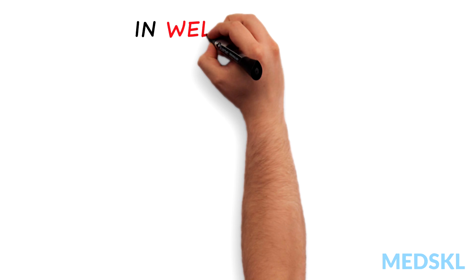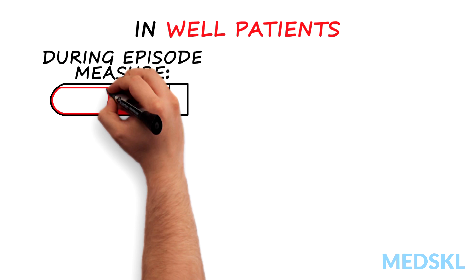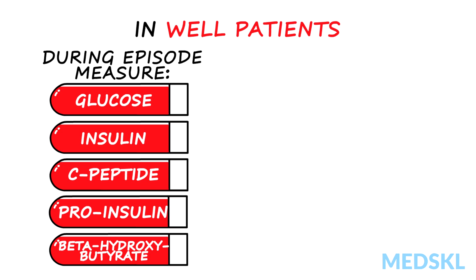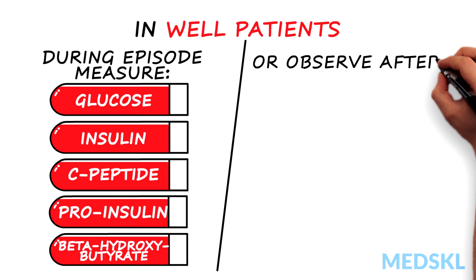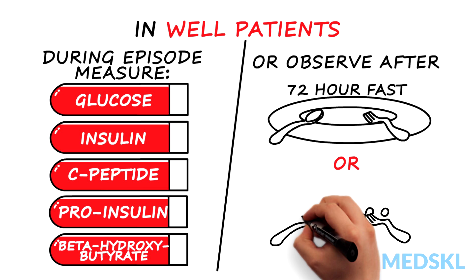In the seemingly well patient, if you're able to observe a spontaneous episode, measure plasma glucose, insulin, C-peptide, pro-insulin, and beta-hydroxybutyrate. If you can't observe a spontaneous episode, recreate the circumstances in which symptomatic hypoglycemia is likely to occur with either a fast of up to 72 hours or after a mixed meal.